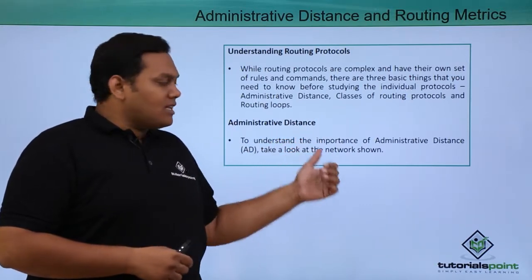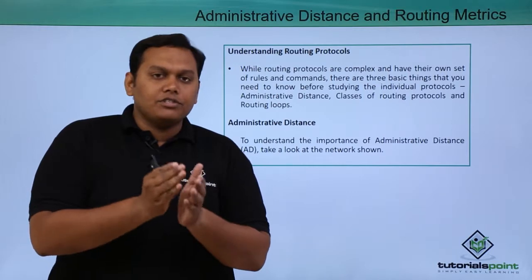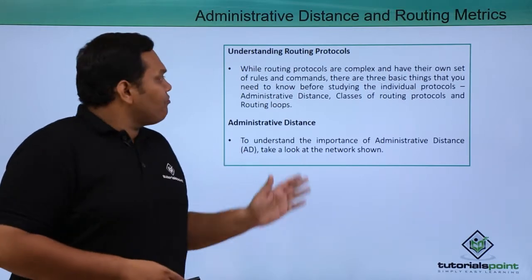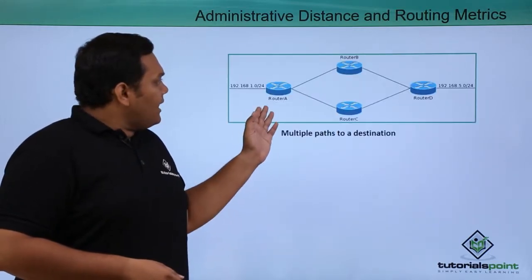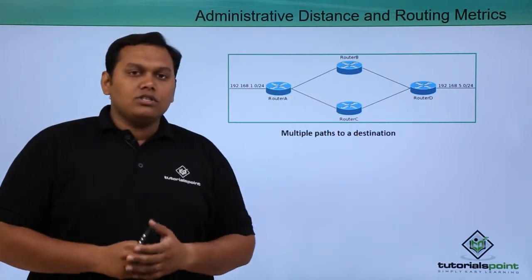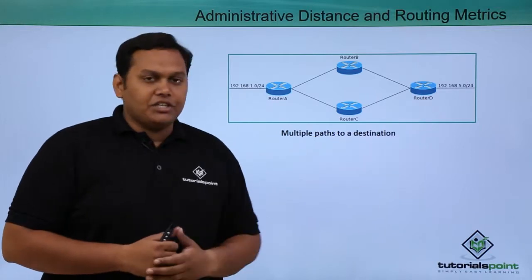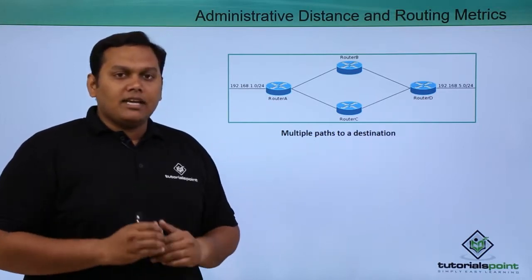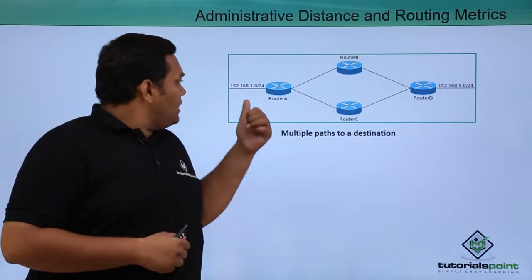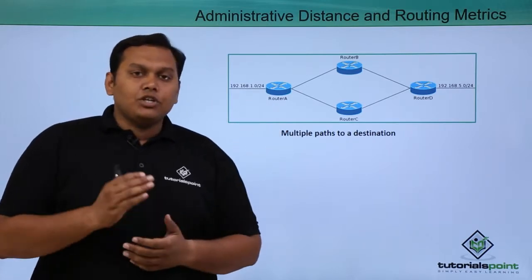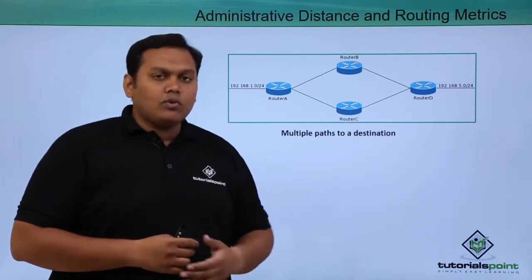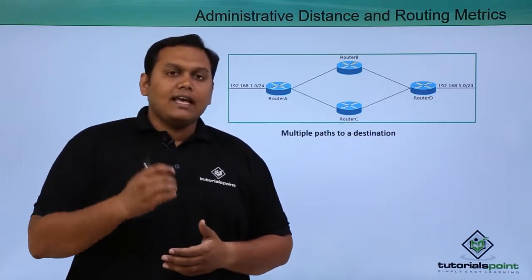To understand the importance of AD — which stands for administrative distance — take this example. We have router A, router B, router C, and router D. Router A is the source and router D is the destination. Router A has an interface IP address of 192.168.1.0/24, and the destination network is 192.168.5.0/24.